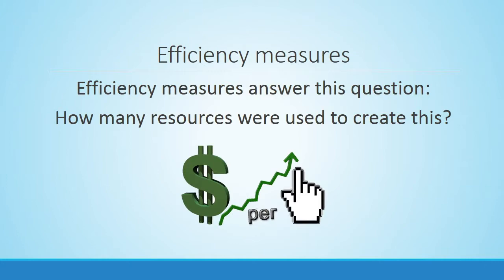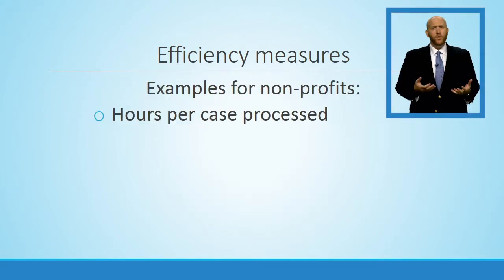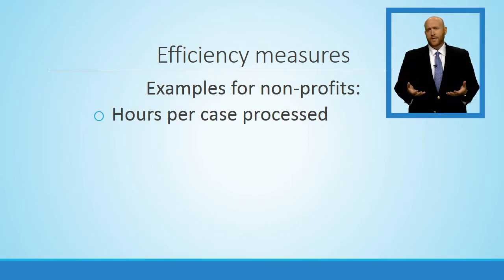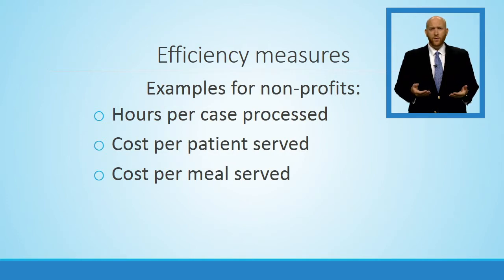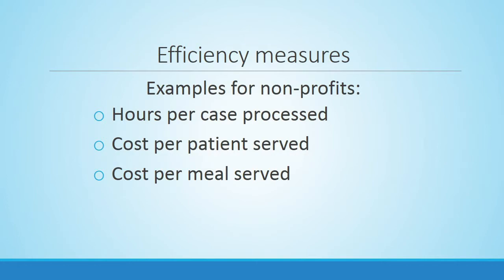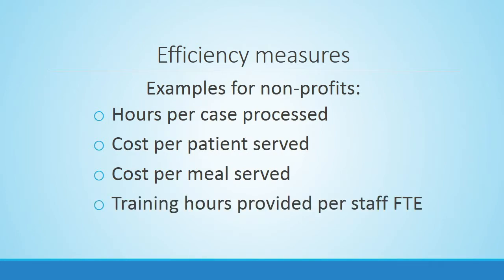The second type of performance measure the City tracks is efficiency. Efficiency measures seek to answer the question: how many resources did it take to create the workload we got done? Efficiency is most often measured in time and money — cost per unit or hours per unit. For example, a nonprofit counting cases processed might use hours per case processed. A nonprofit providing medical or feeding services might track cost per patient or cost per meal served. A nonprofit providing training might measure training hours provided per full-time staff equivalent position.